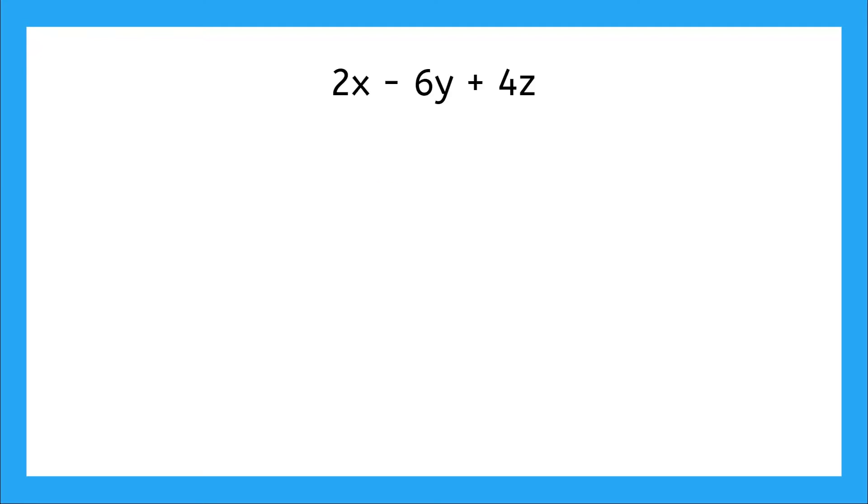Let's start with this expression, 2x - 6y + 4z. Right off the bat, what do you notice? I see three terms and no like terms. They all have different variables, right? Do you think there are any common factors we could factor out?